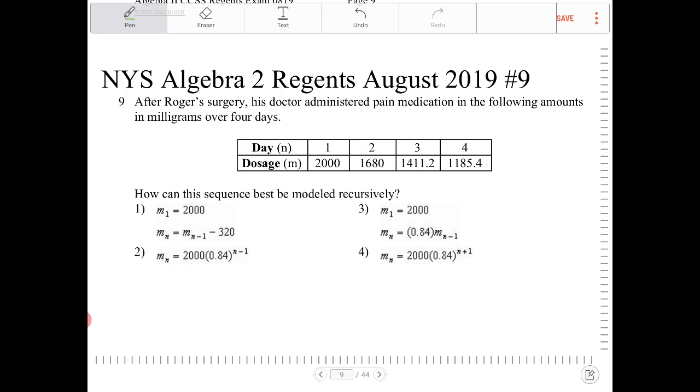And then from 1680 to 1411.2, clearly that's not the same difference. So this is going to be, it looks to be a geometric sequence.